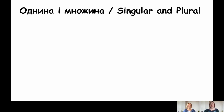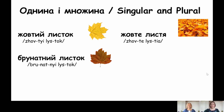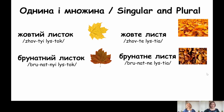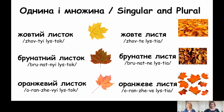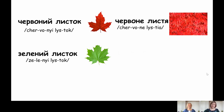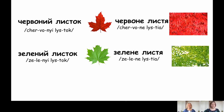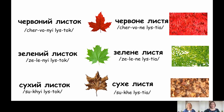Однина і множина. Singular and plural. Жовтий листок — жовте листя. Брунатне листя. Оранжевий листок — оранжеве листя. Червоний листок — червоне листя. Зелений листок — зелене листя. Сухий листок — сухе листя. Знаменіто.